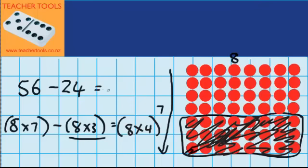So the answer to 56 minus 24 must be 32. Now let's just have a look back at our question for a sec. You can see I chose 8 and 8 because they were both common factors of 24 and 56. And notice how 7 take away 3 gives me 4. And you saw that that was what happened with our array over here.